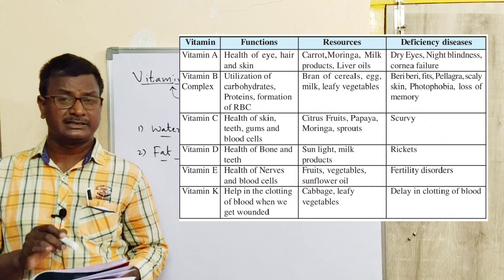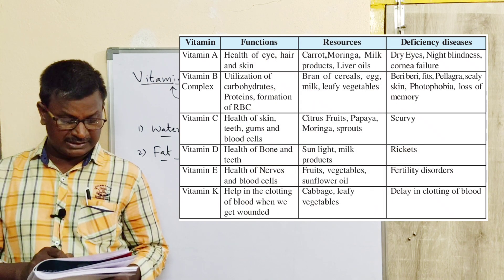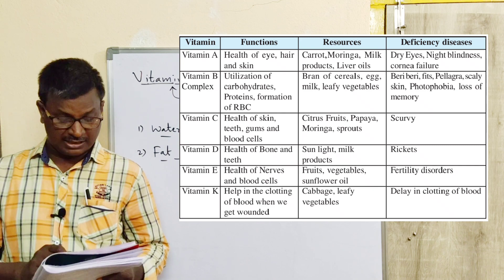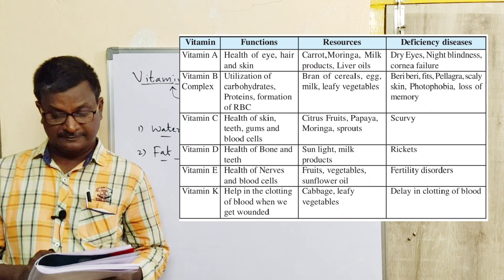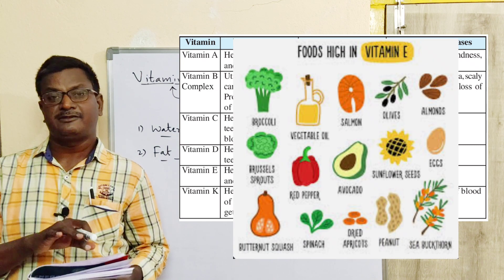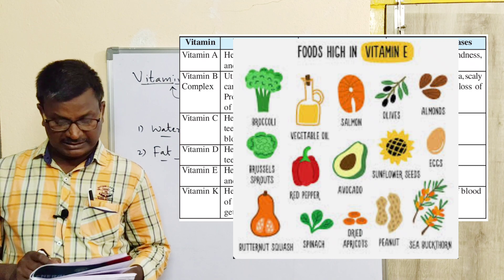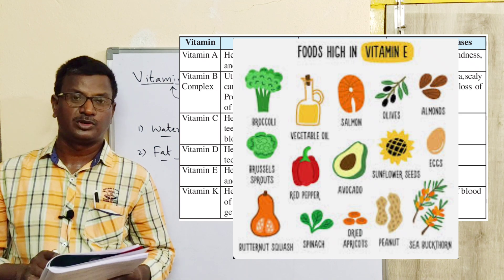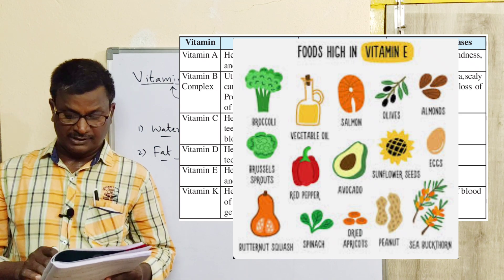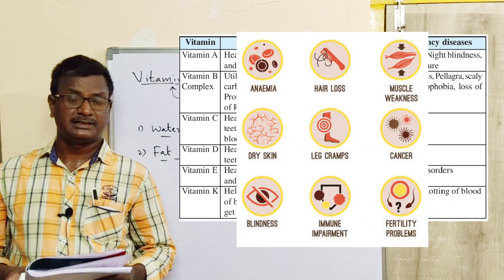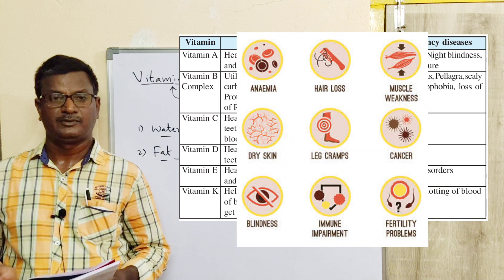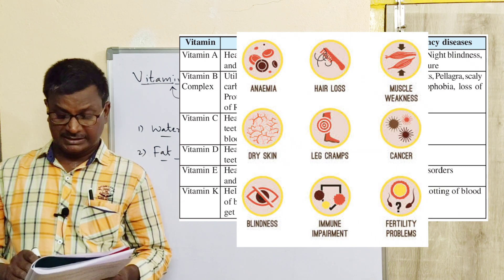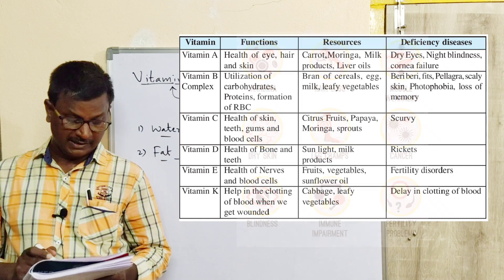Next, vitamin E. Functions: health of nerves and blood cells. Sources: fruits, vegetables, and sunflower oil. Deficiency of vitamin E causes fertility disorders.